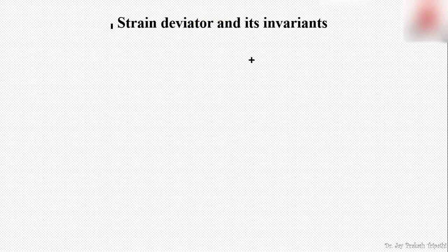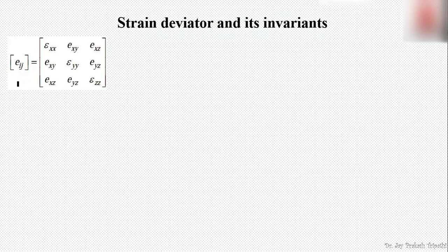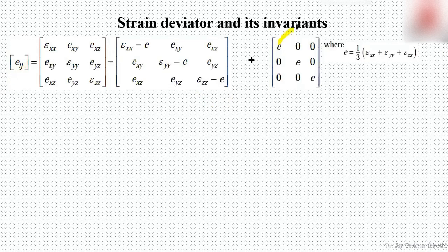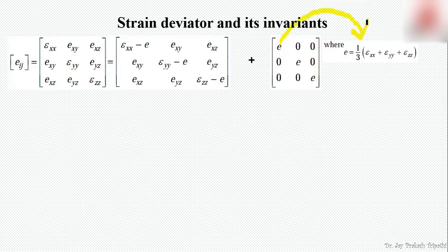Let's discuss the concept of strain deviator and its invariance. Similar to what we have seen in the chapter on analysis of stress, we begin with a state of strain matrix Eij and resolve it into two components, where the strain E denotes the mean of normal strains epsilon_x, epsilon_y, and epsilon_z, representing mean elongation or mean strain at a point.